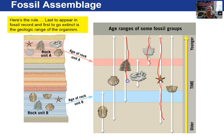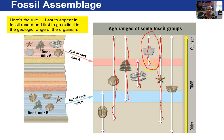The age of rock unit A is determined by finding the organism that was last to appear and the organism that was first to go extinct. Of these five fossils, the last to appear is the maple leaf — it doesn't show up until this point, and everything else appeared much earlier. The first to become extinct is the skull, while the others are all still around. So the last to appear and the first to become extinct define the age of the rock layer — it's the only time when all five organisms lived at the same time.